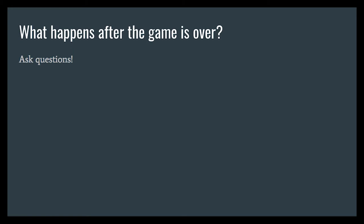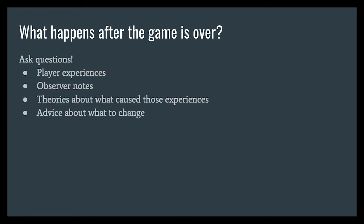After the playtest is over, you can ask questions. You should ask four kinds of questions. First, find out what the players experienced — get them to tell you what they felt, what was exciting or confusing, so you really understand how they experienced the game. Then go to your observers to see what they noticed and what they saw. Third, move into theories about what caused those experiences — maybe a particular thing in the game made people laugh every time. And then only at the end do we talk about advice for things we could change. This is the hardest part — getting people to wait until the end to offer advice. We want experiences, observations, and theories first.